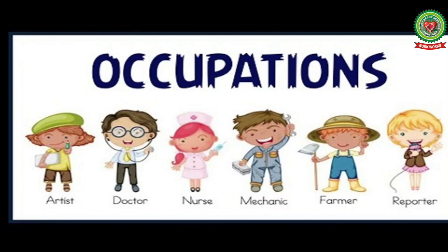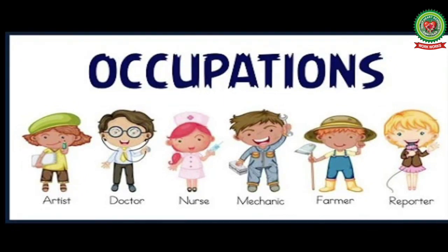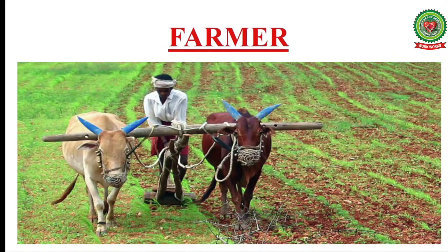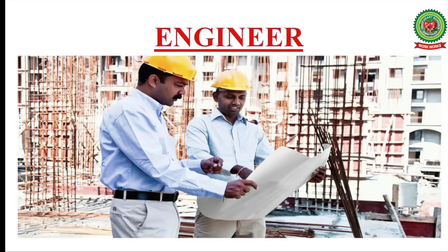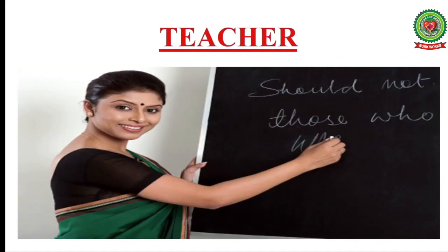Different people do different types of work to earn money. Any work which helps a person to earn money is called an occupation. In India, there are many types of occupations. Many people work as farmers, many others work as doctors, engineers, tailors, nurses and teachers. Every occupation is important.